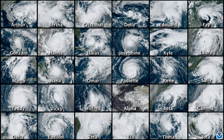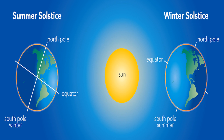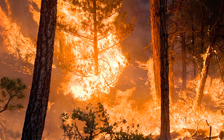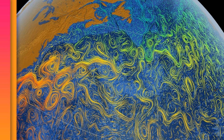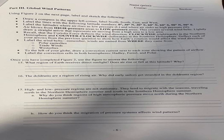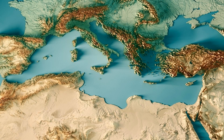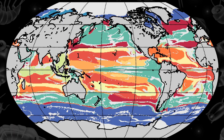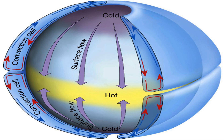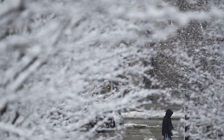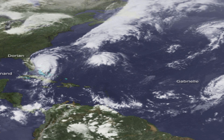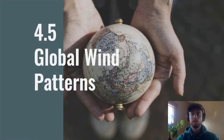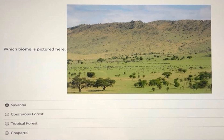The major global wind patterns, such as the trade winds, prevailing westerlies, and polar easterlies, are driven by the uneven heating of the Earth's surface. These wind patterns contribute to the movement of warm and cold air masses, as well as the redistribution of heat from the equator towards the poles. In turn, this influences the temperature and weather conditions experienced in different regions, leading to the distinct seasons we observe. Understanding the intricate relationship between global wind patterns and seasons is key to comprehending the complex dynamics of our planet's climate system.